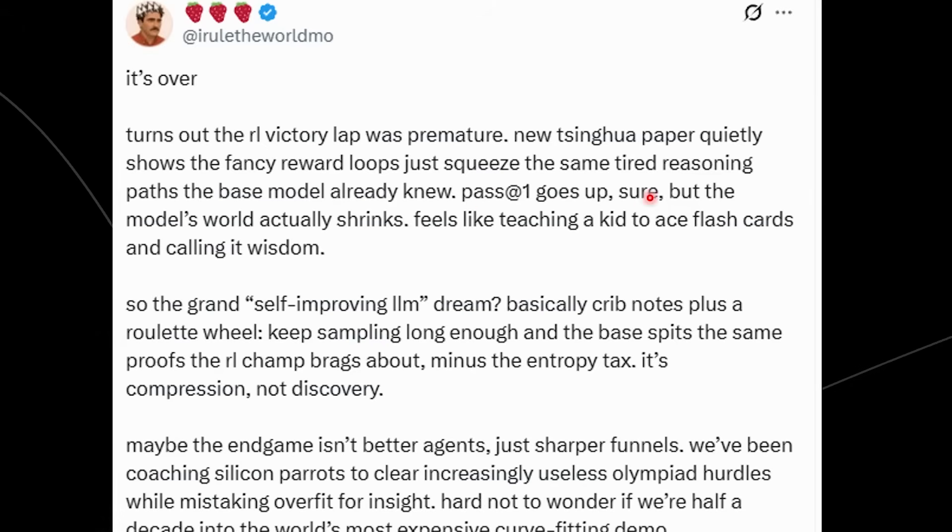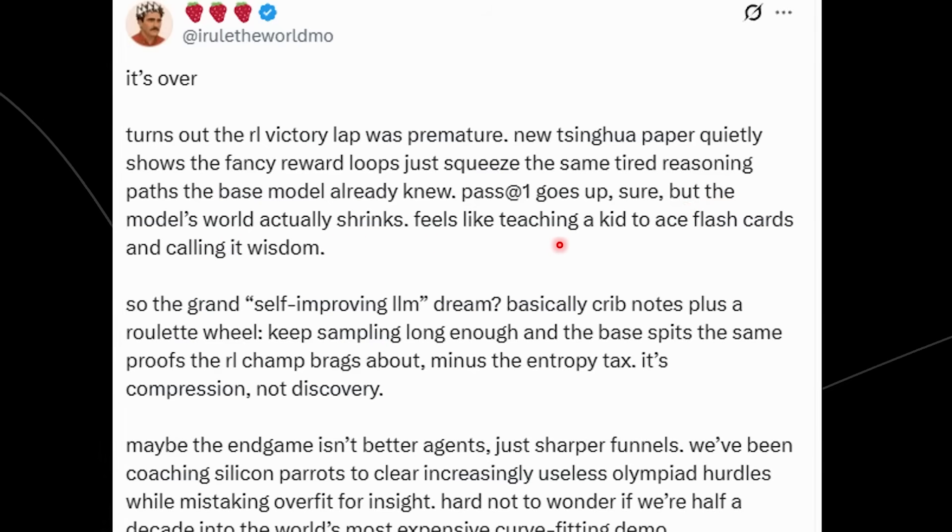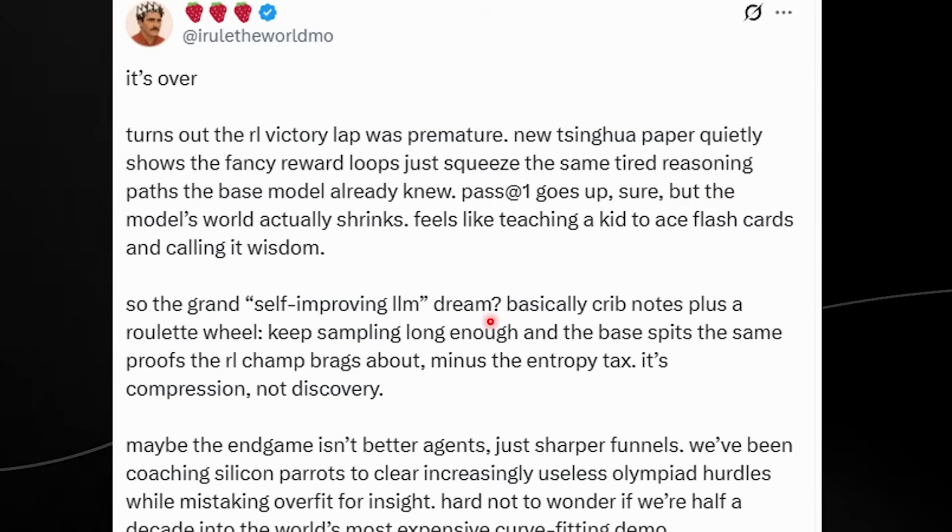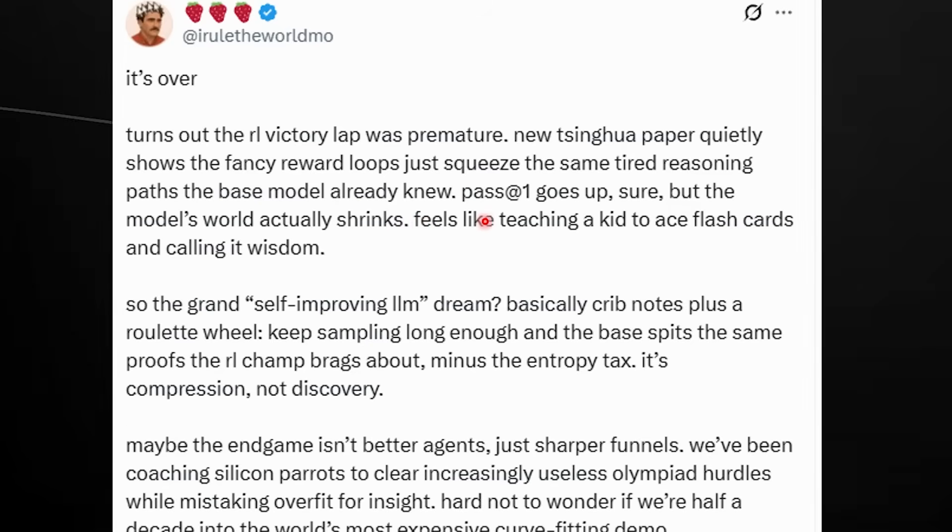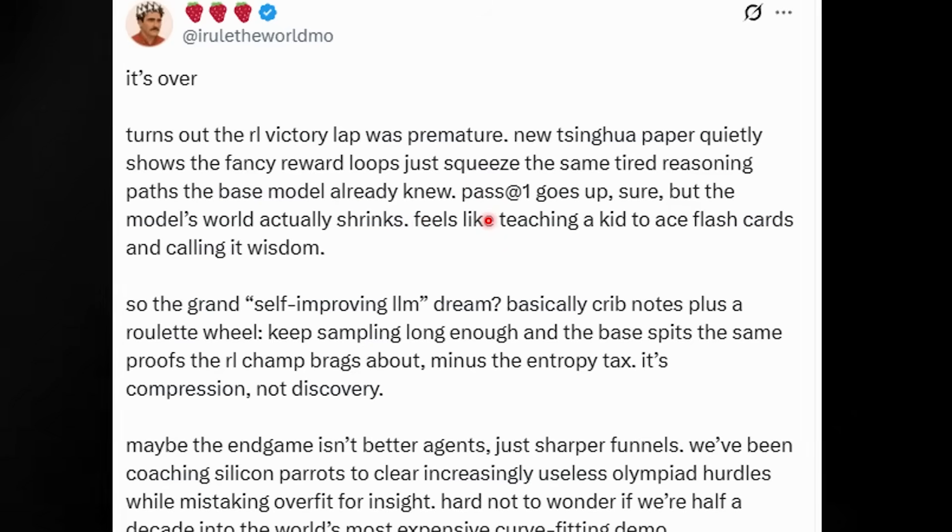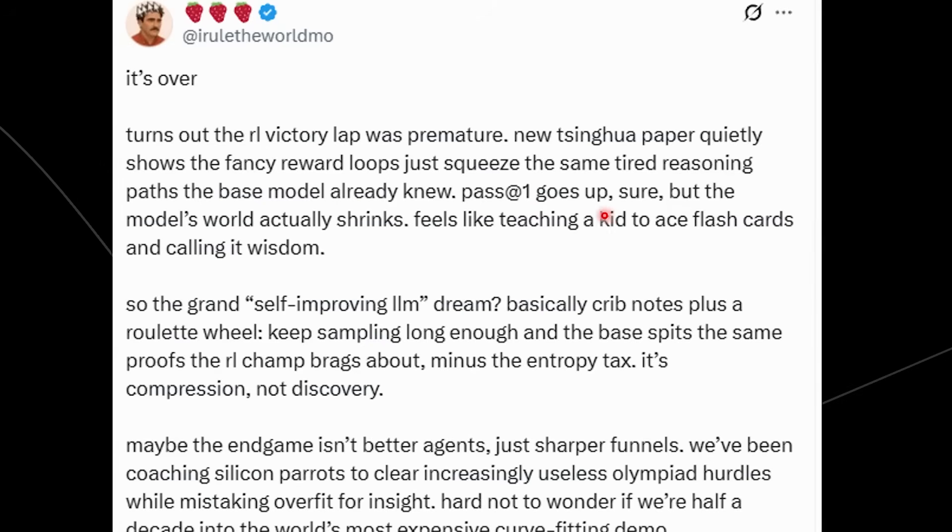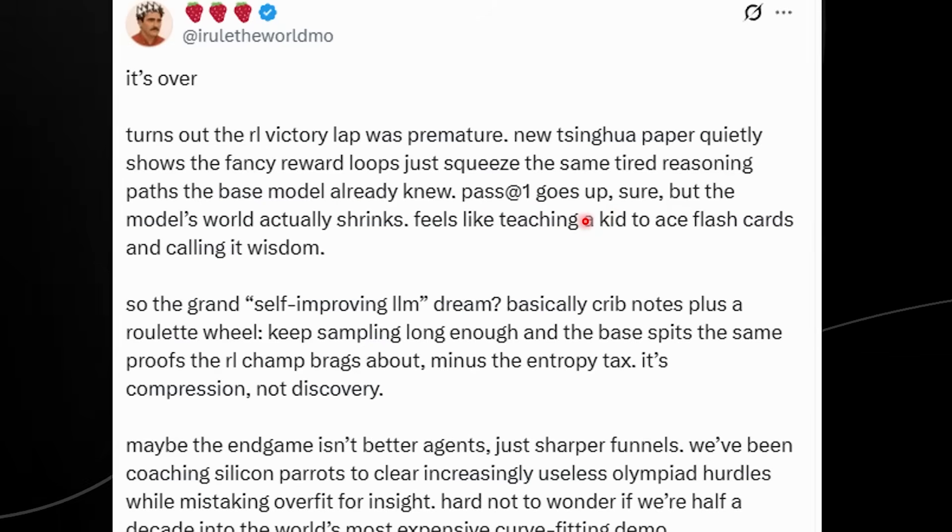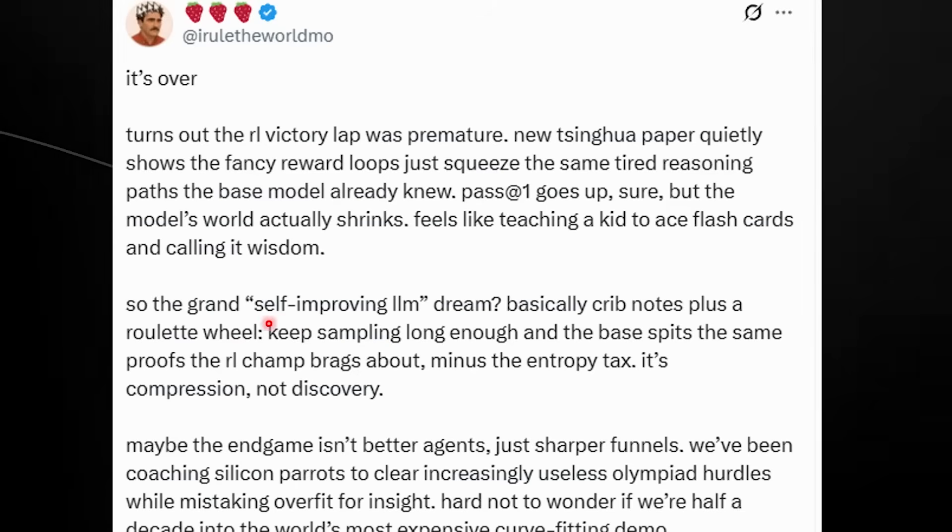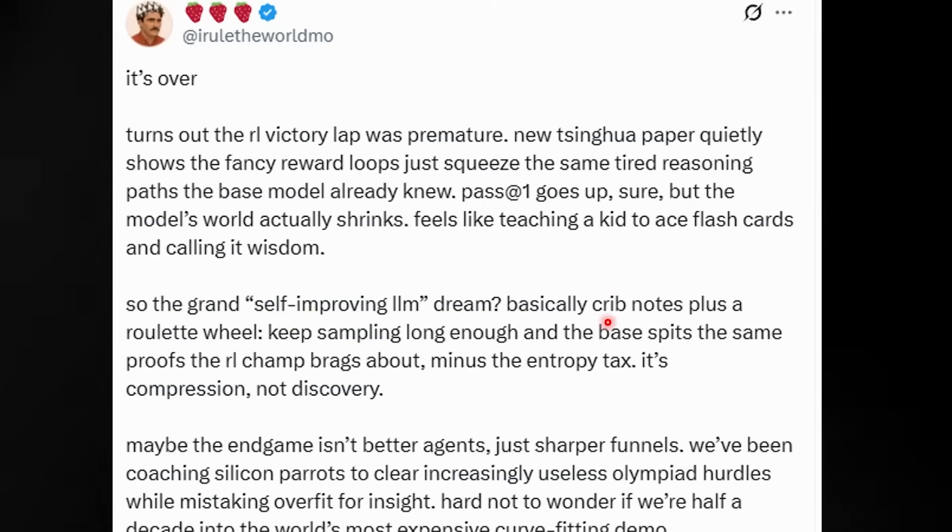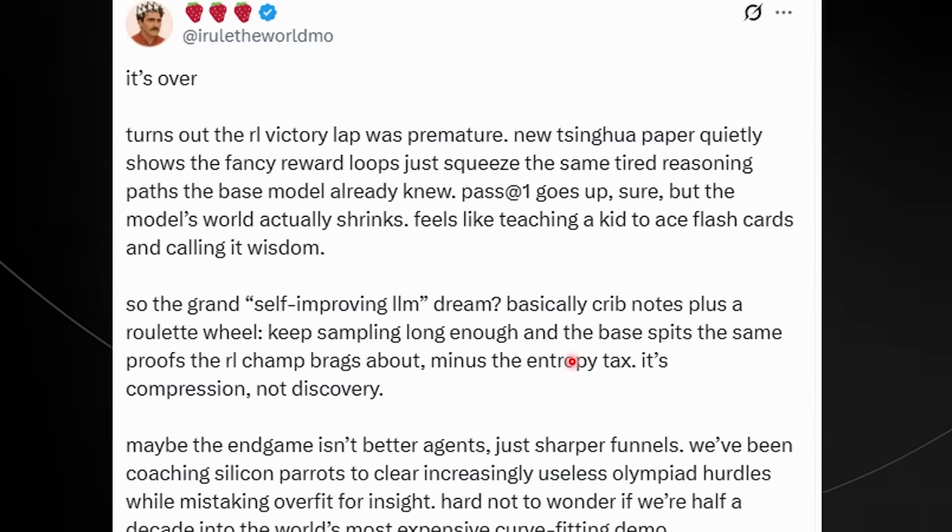Here he's basically saying that everyone had thought reinforcement learning was unlocking smart AI, but this paper shows nope, it just pushes the AI to choose answers it already had in its brain more often. It's like forcing you to play its greatest hits instead of composing new music. He also says here the pass at one goes up, sure, but the model's world actually shrinks. Feels like teaching a kid to ace flashcards and calling it wisdom. Yes, basically what he's saying here is that reinforcement learning does make the AI get the right answer faster on the first try, which is at one. However, reinforcement learning is like drilling a kid with flashcards where they remember the answers but don't understand anything deeper.